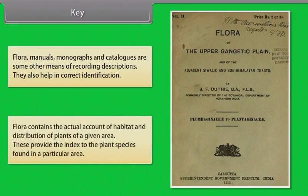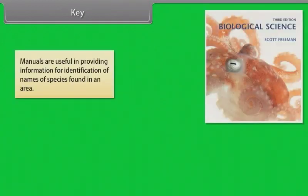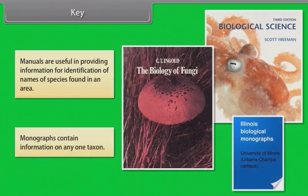Flora contains the actual account of habitat and distribution of plants of a given area and provides the index to the plant species found in a particular area. Manuals are useful in providing information for identification of names of species found in an area. Monographs contain information on any one taxon.